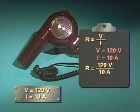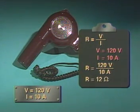Then we insert the given values, which gives us R equals 120 volts divided by 10 amps. We end up with R equals 12 ohms of resistance.